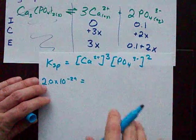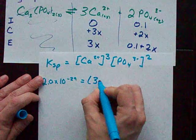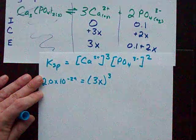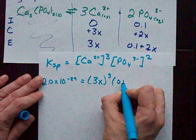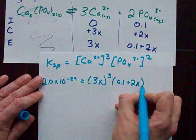The Ksp we were given is 2 times 10 to the minus 29. The calcium equilibrium concentration is 3x, it is cubed, and the equilibrium concentration of phosphate is 0.1 plus 2x squared.